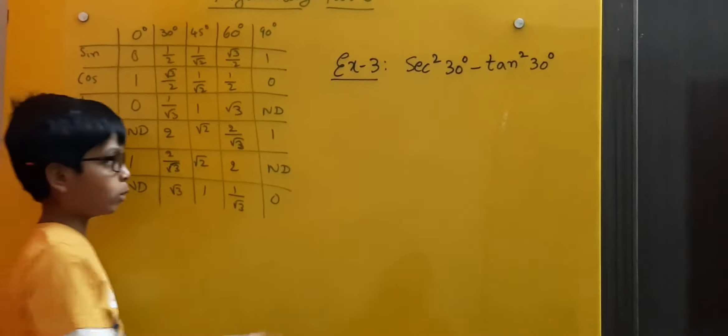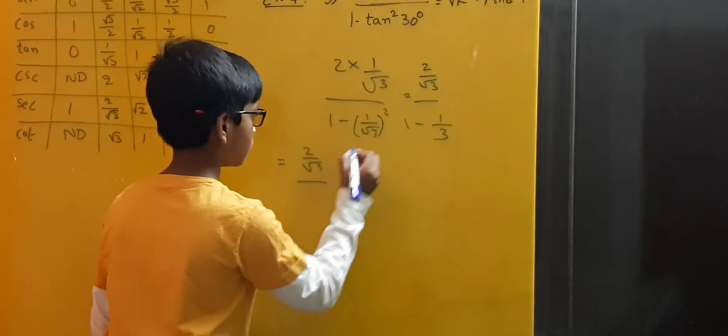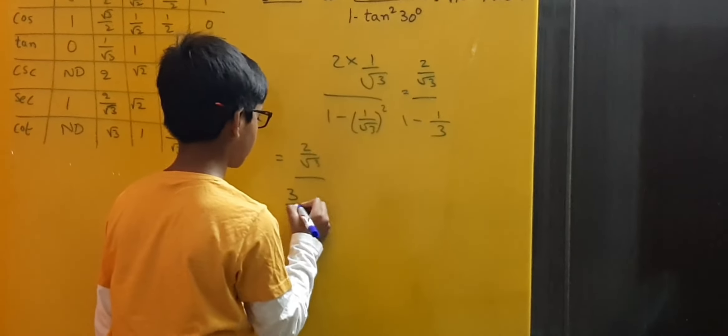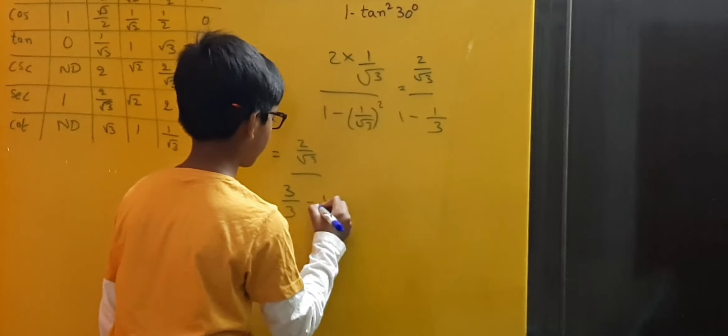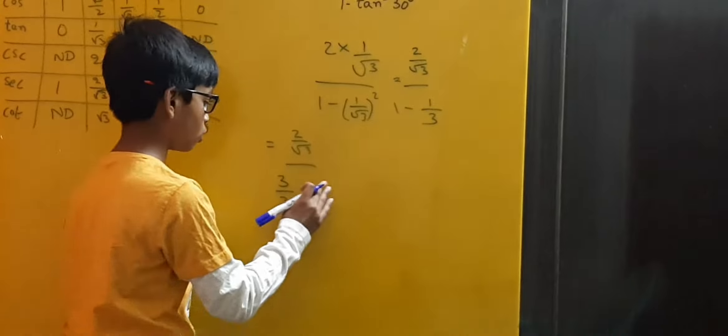2 by root 3 is equal to 2 by root 3. Now let us equal the denominators. Here let us write 3 by 3 minus 1 by 3. 3 by 3 minus 1 by 3 is equal to 2 by 3.